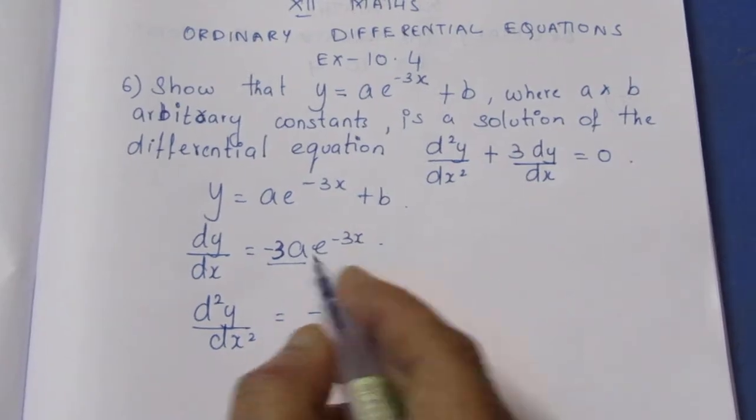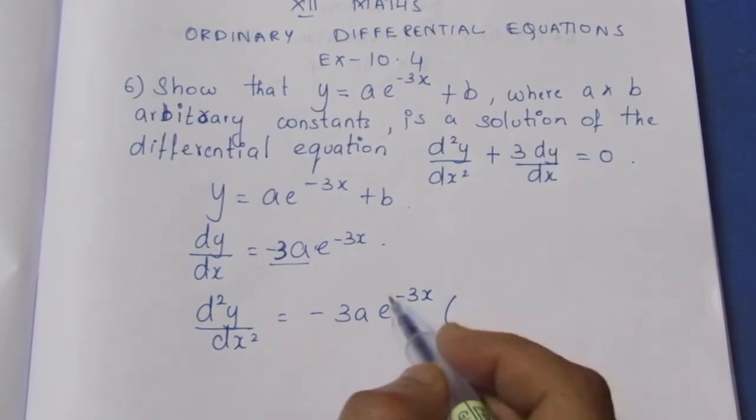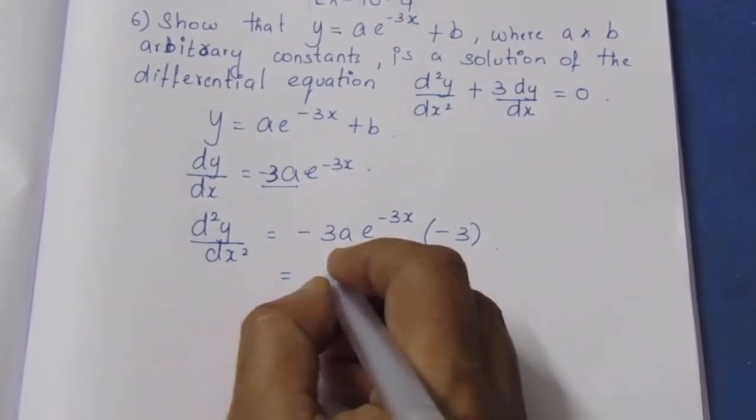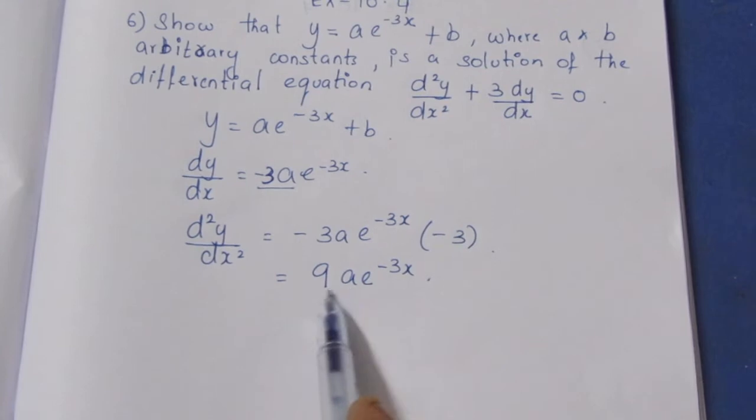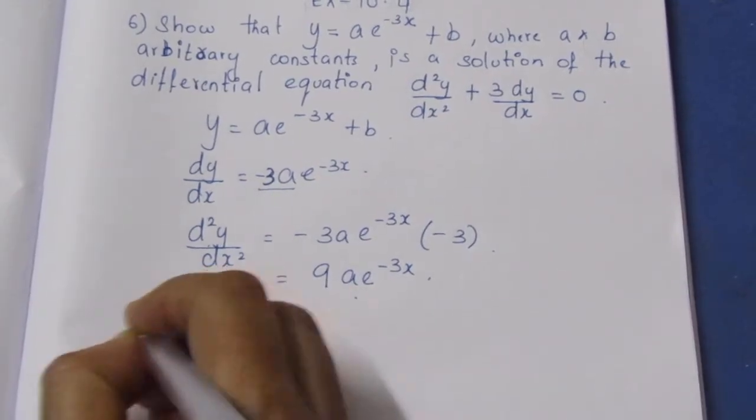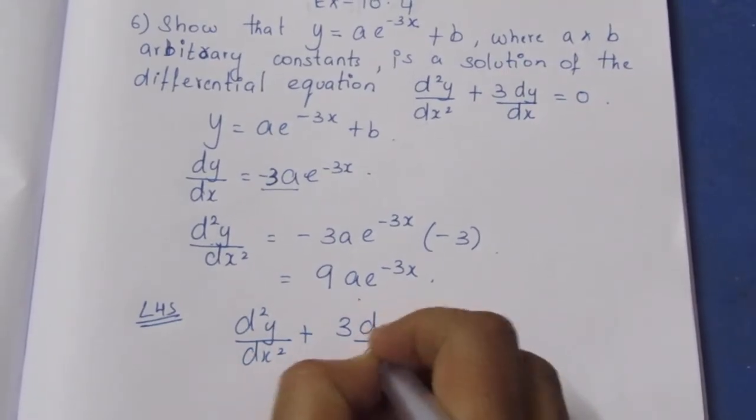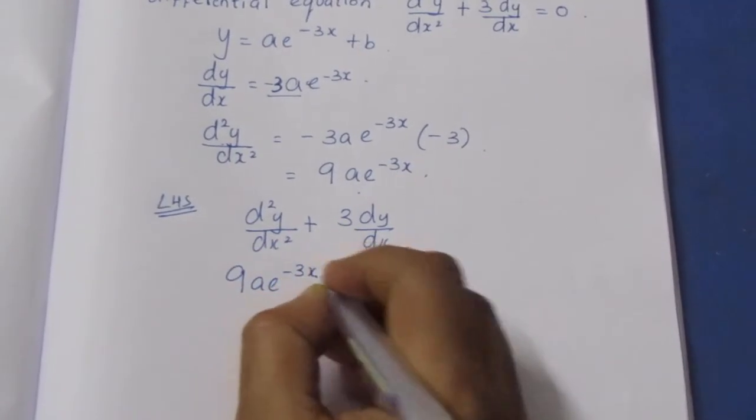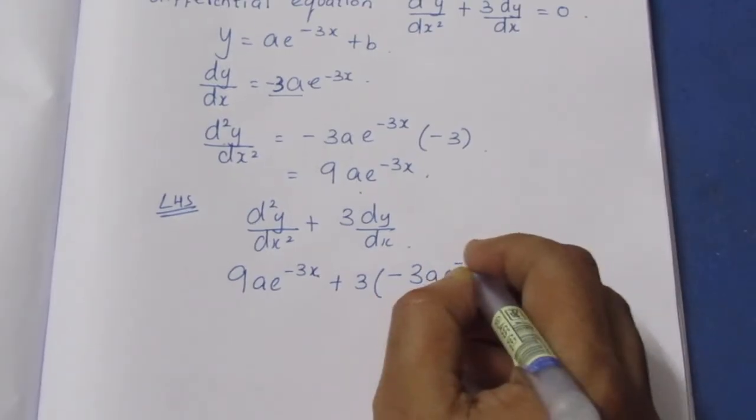Now finding d squared y by dx squared. Differentiating minus 3ae to the power minus 3x again: minus 3a times e to the power minus 3x times minus 3 equals 9ae to the power minus 3x.